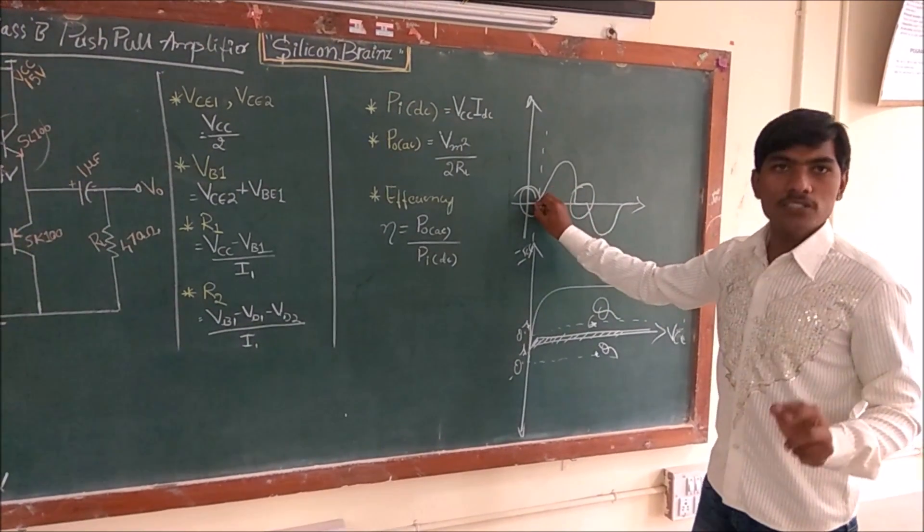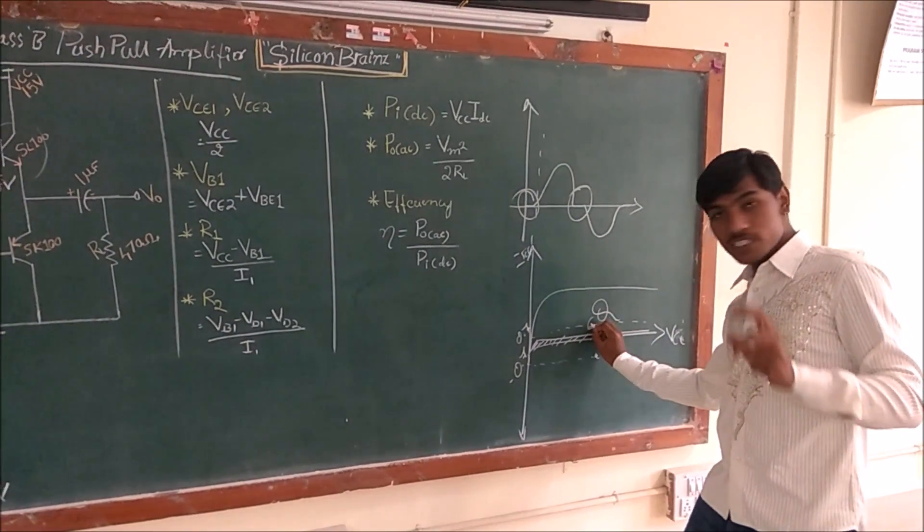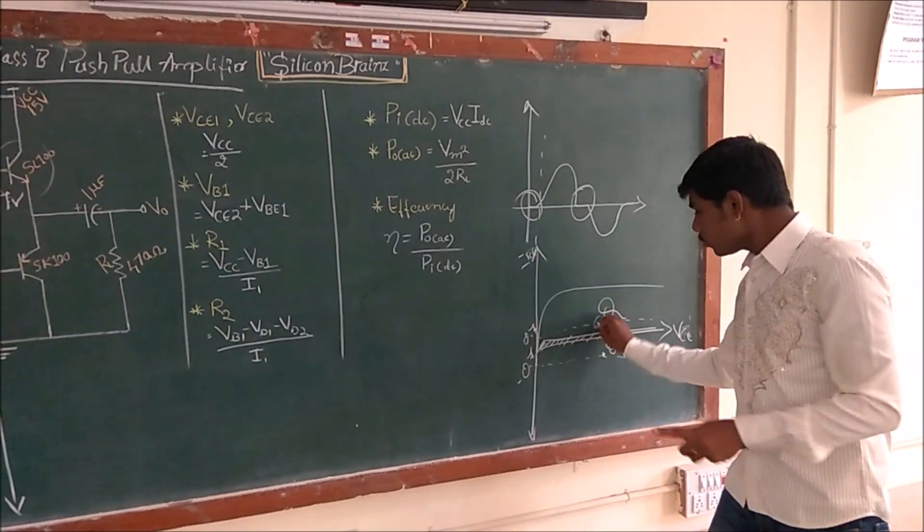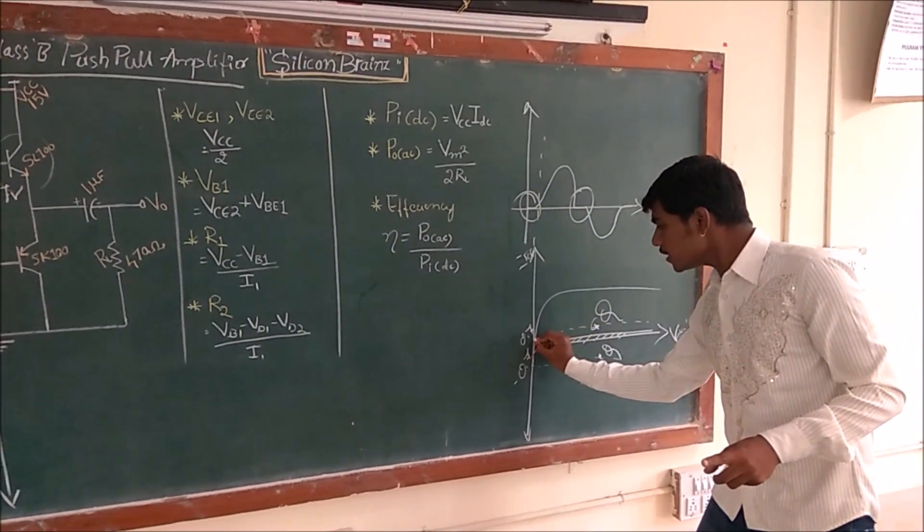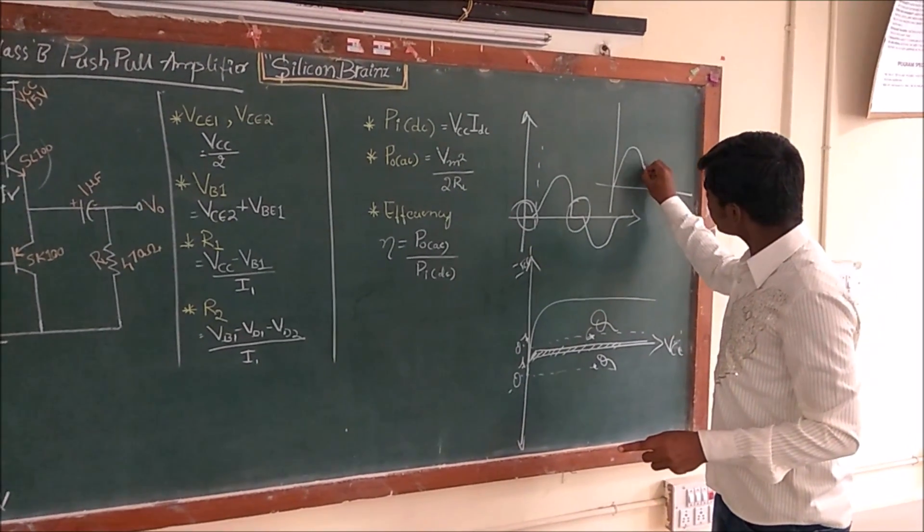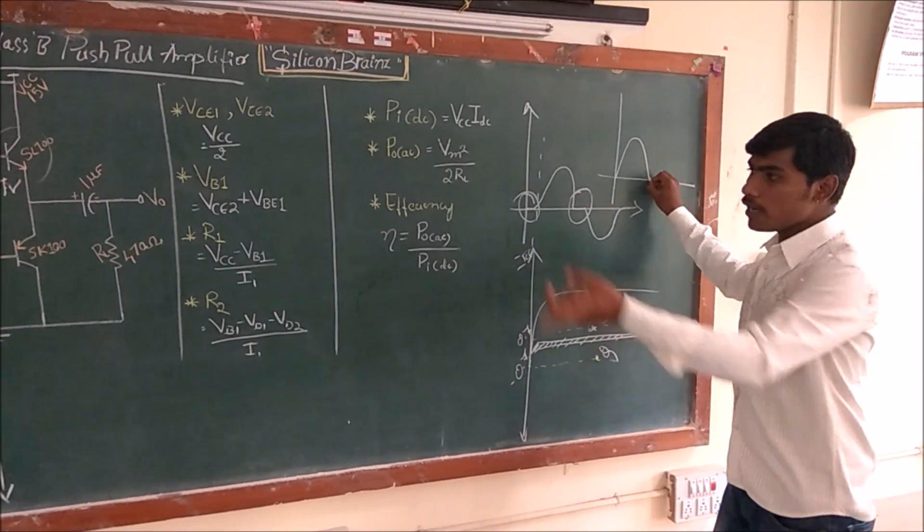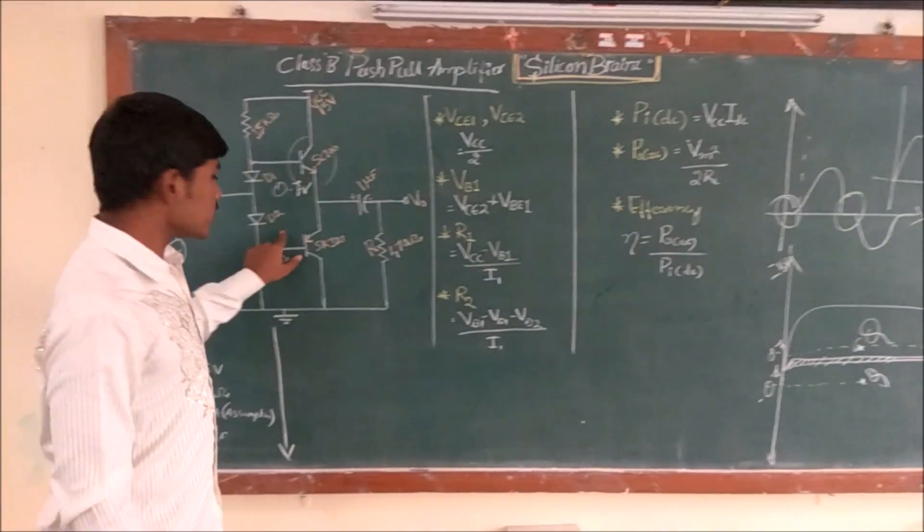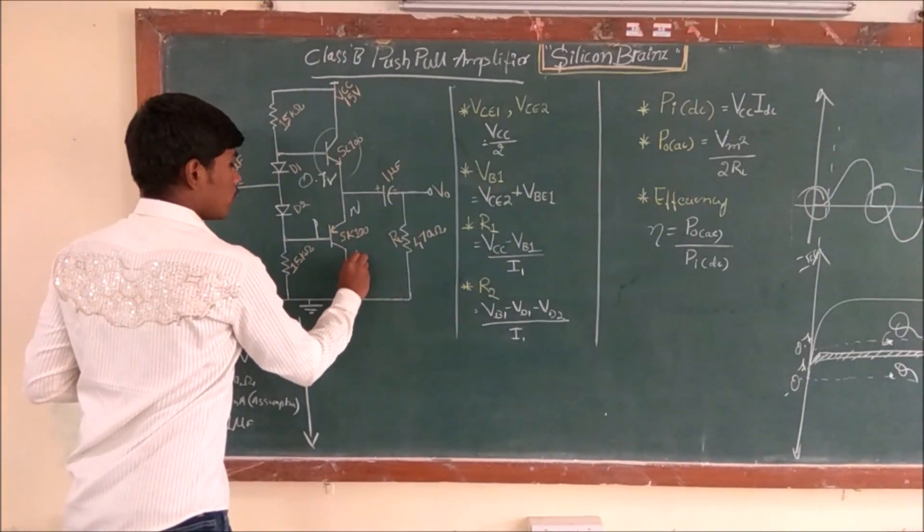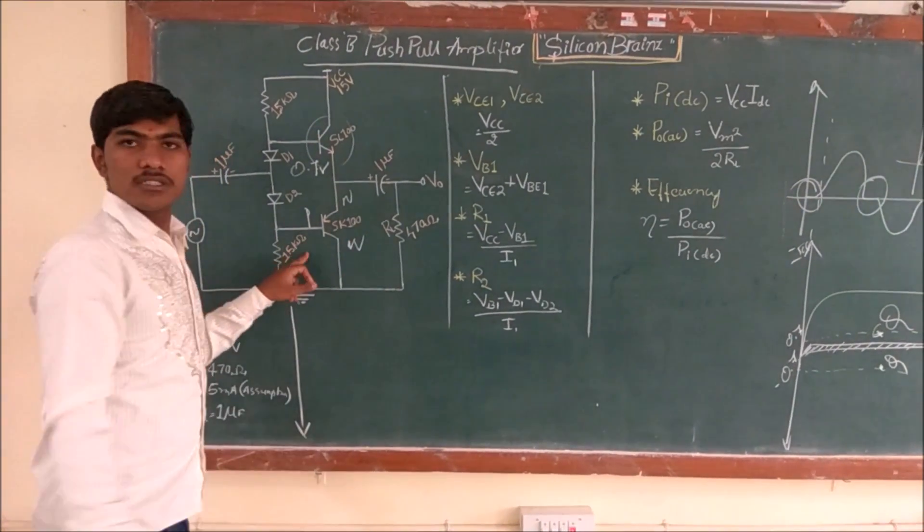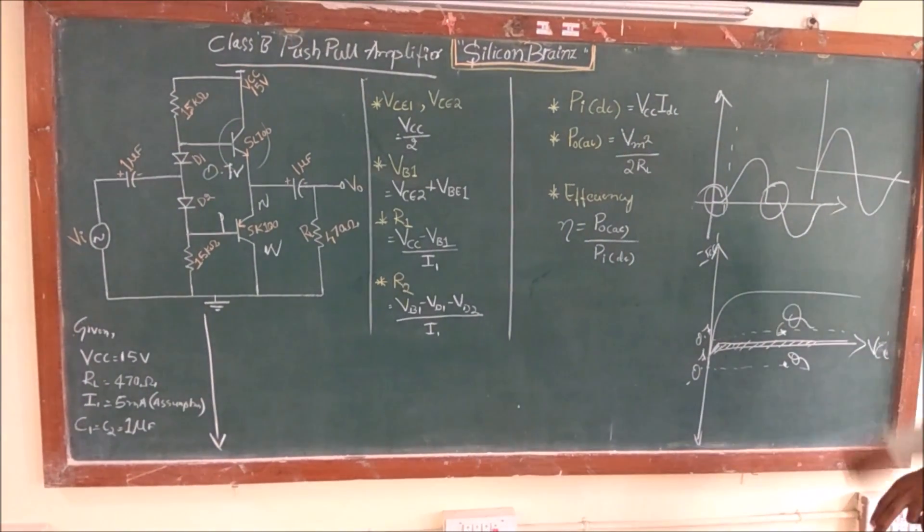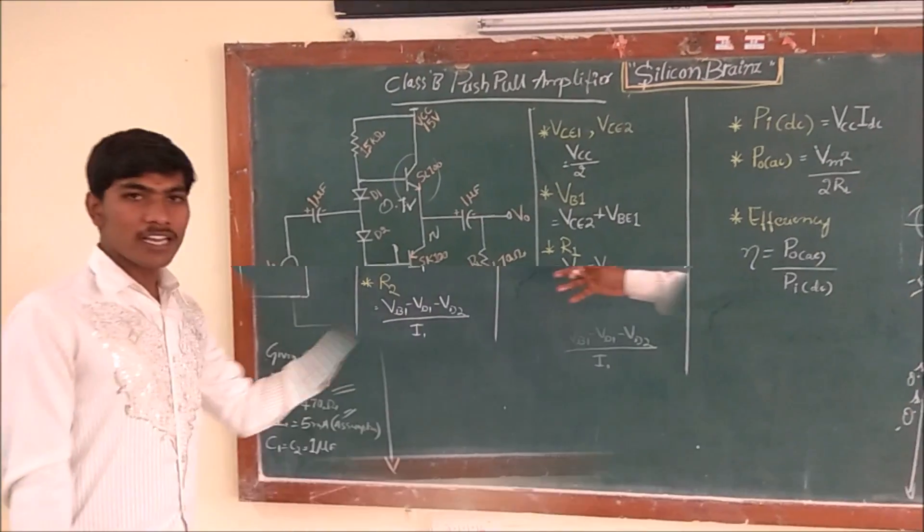It is already biased to 0.7 volts, that means it is already in the 0.7 volts range. If you observe the signal, it immediately starts increasing. It is already biased and starts immediately increasing. The same thing, this is PNP transistor, it stores negative effects without any issues. That's why we analyze the design.